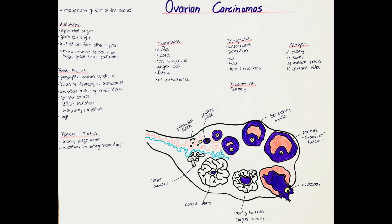Ovarian cancers are usually treated by surgery. In the surgery, it is attempted to remove the entire tumor as a whole, to not iatrogenically cause metastasis. Other ways for the tumor to cause metastasis are via direct invasion of other organs in the peritoneum and abdominal cavity — most often the diaphragm is involved. Via the lymphatics, metastasis can occur by different routes.